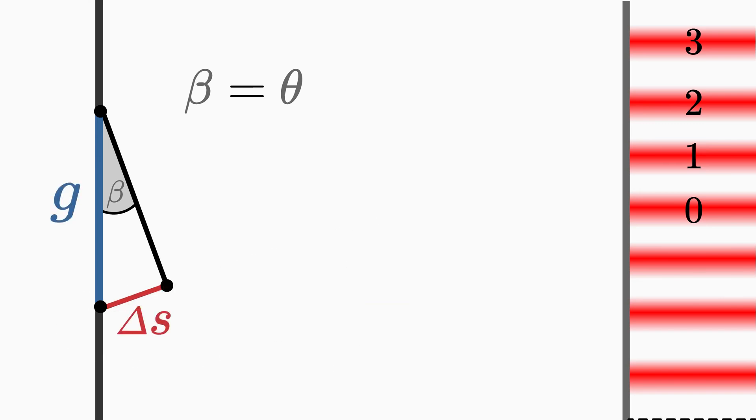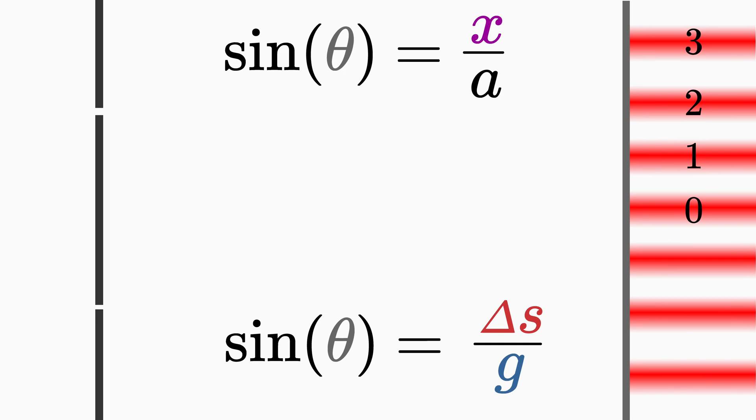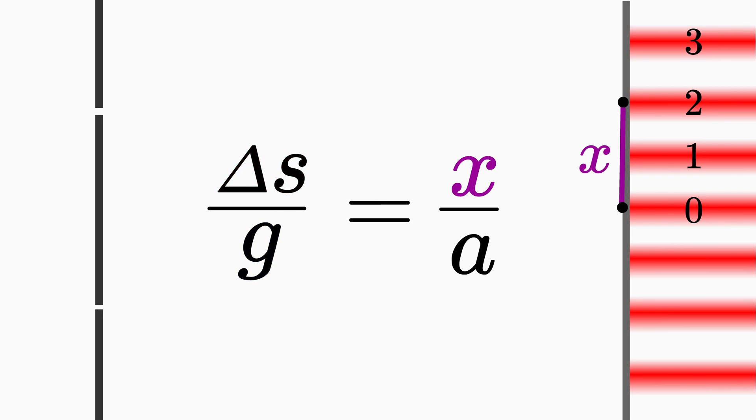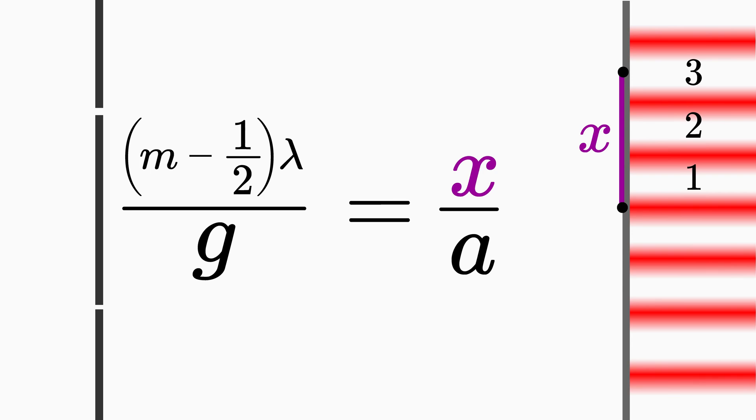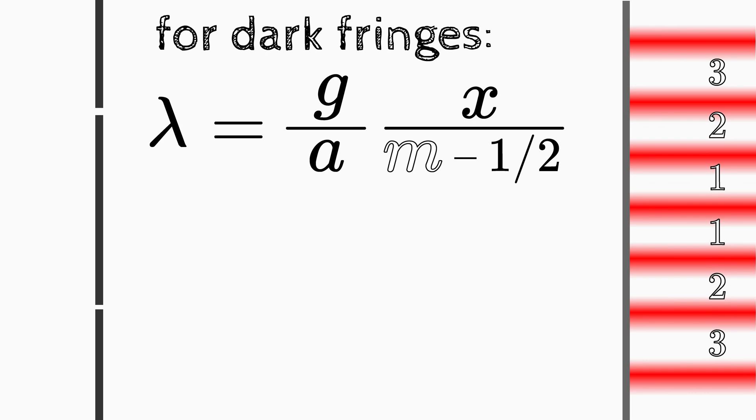With the help of the second approximation, you know that the angle beta corresponds to the angle theta and you can replace it. Just equate the two approximations and you get a very important equation. If you measure the distance from the center of the screen to a bright fringe, then you insert in delta s the condition for constructive interference. And if you measure the distance from the center of the screen to a dark fringe, then you insert the condition for destructive interference in delta s. Note that now all physical quantities are known. x, a and g. Also m is known. To determine m, you count in this case all dark fringes to the dark fringe that is at distance x from the center. Just rearrange the formula for the wavelength and voila, you can use a double slit experiment to determine it.